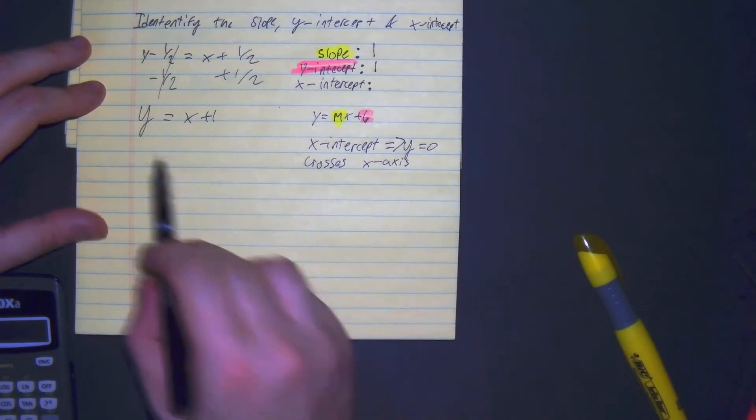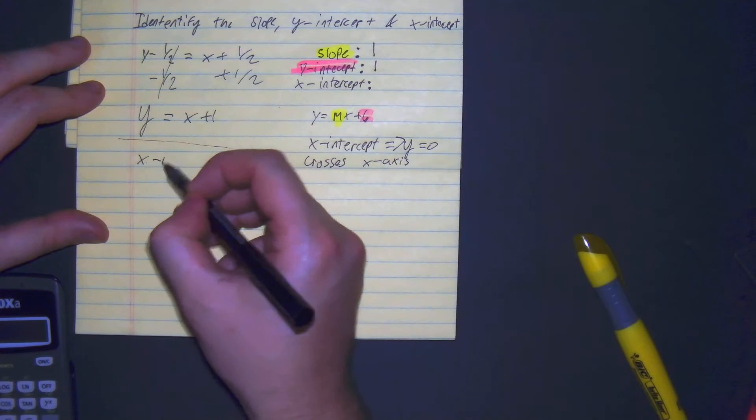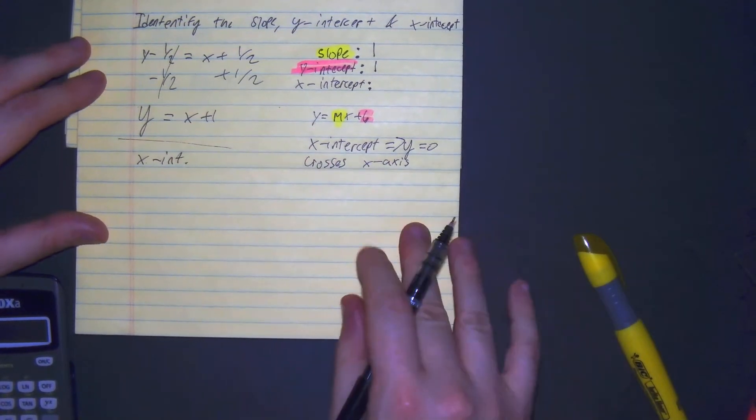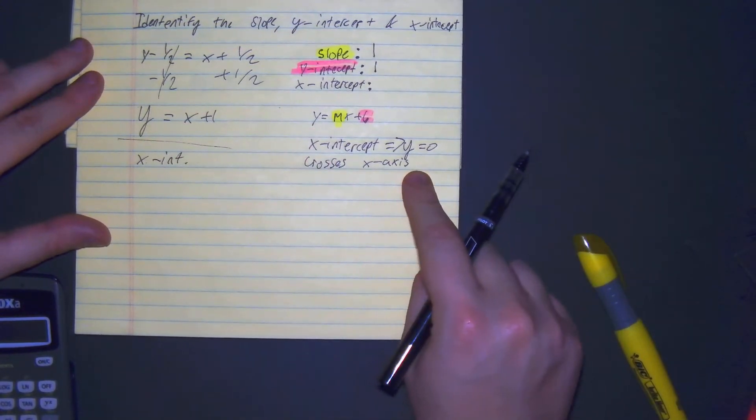Now we just have to find the x-intercept. To find the x-intercept, we're going to make y equals 0.